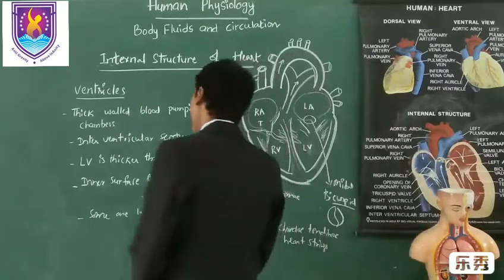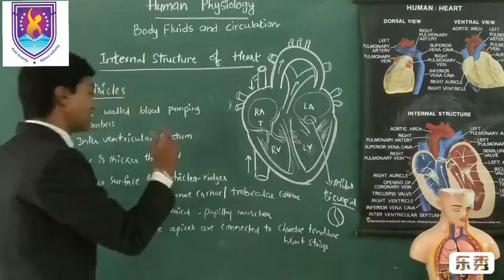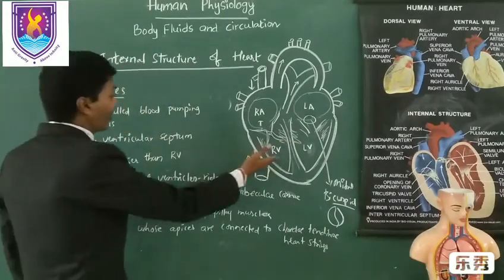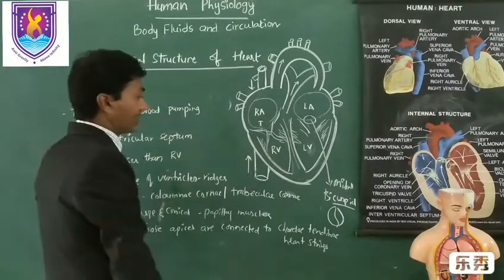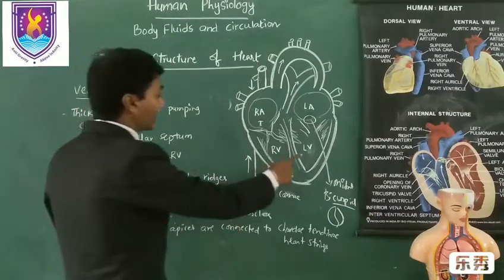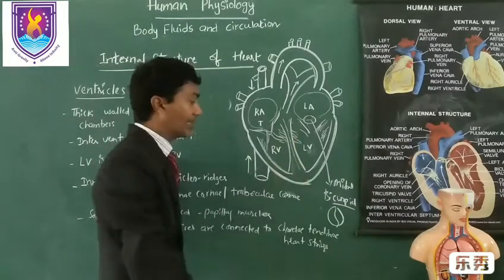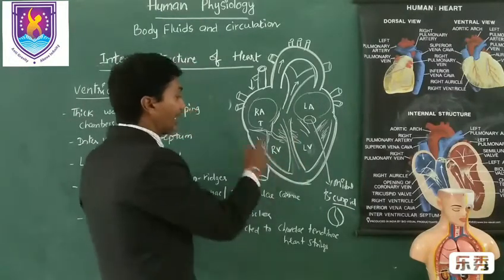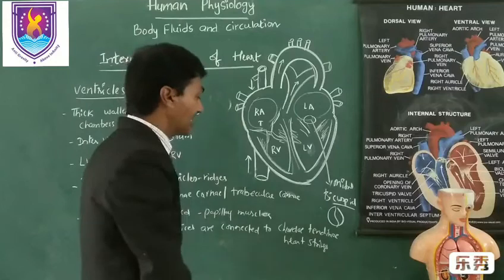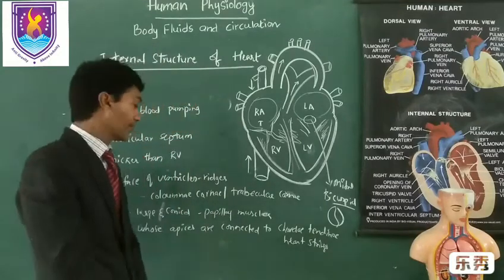The wall of the left ventricle is thicker than the wall of the right ventricle comparatively, because the left ventricle sends blood to the entire body parts, whereas the right ventricle sends blood to only the lungs.